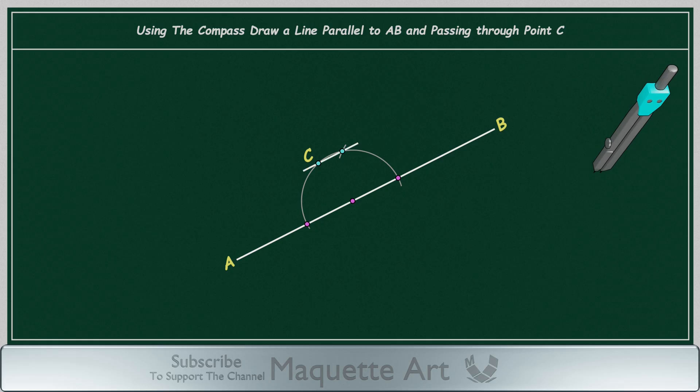As you can see, the two points used to draw the parallel line are very close to each other, giving us less accurate results.